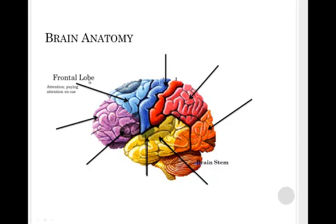Let's look at the different parts of the brain. First thing we have is the frontal lobe. This is the front part of the brain, not the very front, but in the front part of the brain. And this is important for paying attention on cue, for paying attention in general, and paying attention when we say look, pay attention, someone calls your name.